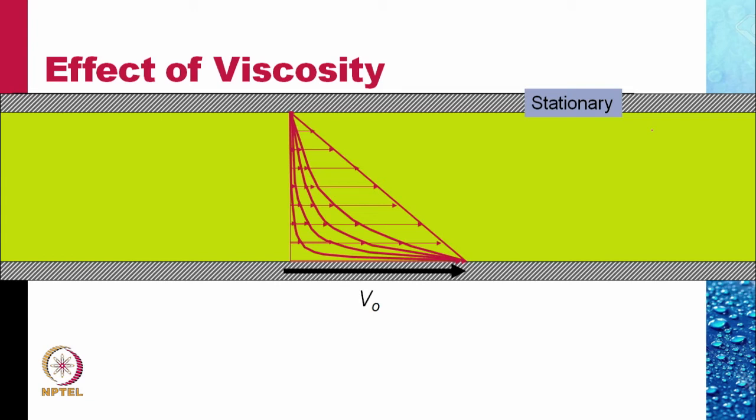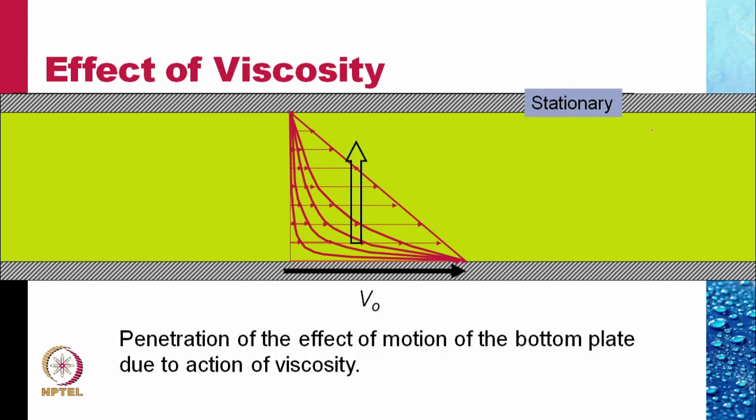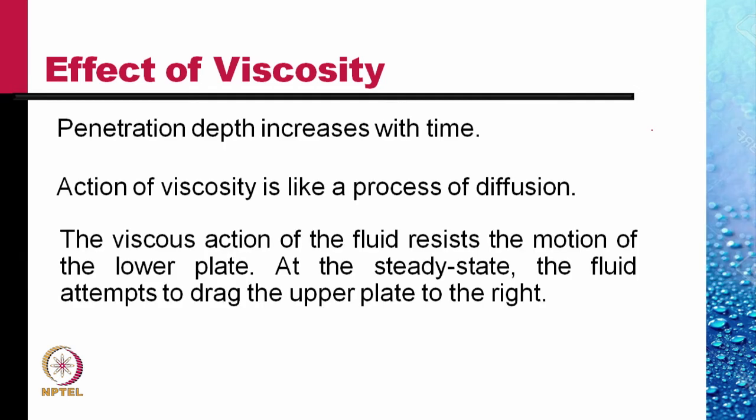What is happening? The effect of the motion of the lower plate is diffusing upward. Diffusion is the word. We say the momentum, later on we will use another word vorticity, is diffusing upwards. Penetration and the effect of motion of the bottom plate due to action of viscosity penetrates upwards. This is the effect of viscosity. The penetration increases with time. Action of viscosity is like a process of diffusion.